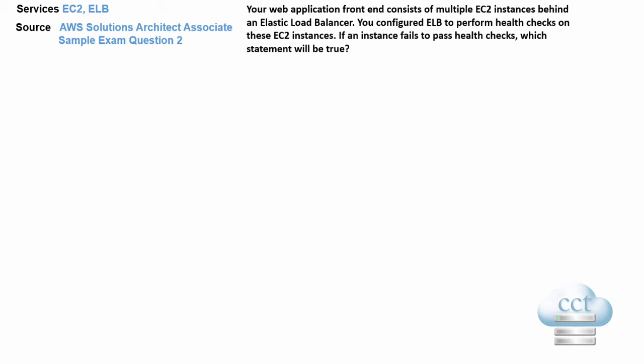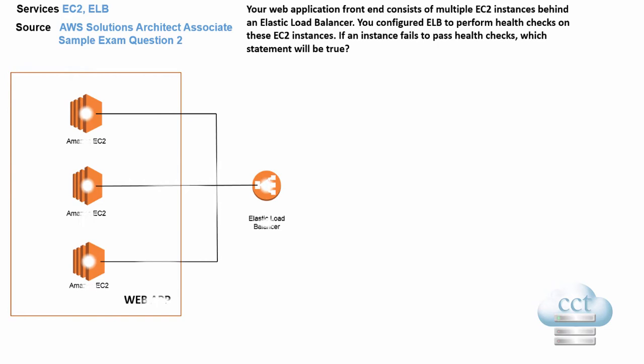With all these questions, I think a good thing to do is try and visualize it or even draw it on a bit of paper. I've helped you along here by actually throwing up this diagram. So that's basically what they're asking — an Elastic Load Balancer with three EC2 instances, and what happens if one of those EC2 instances fails.